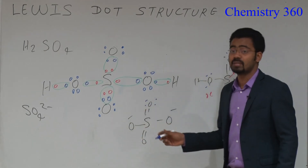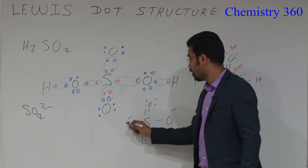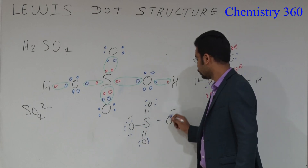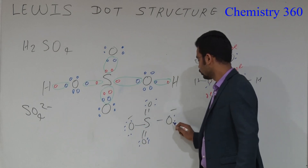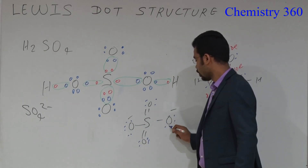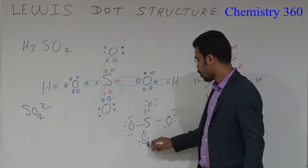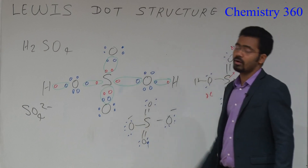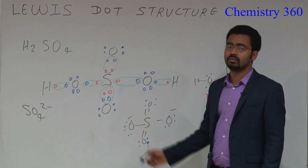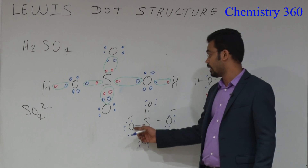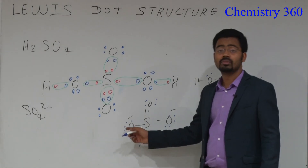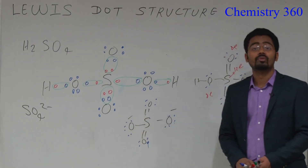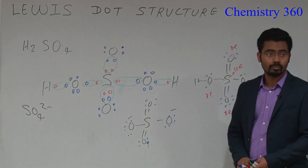When oxygen has a negative charge, how many lone pairs? Three lone pairs. Double-bonded oxygen has two lone pairs, while single-bonded oxygen has three lone pairs. Sulfur has no lone pair.